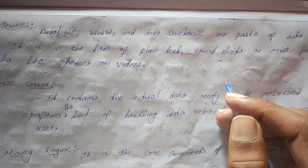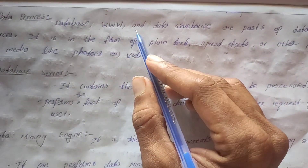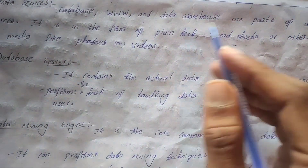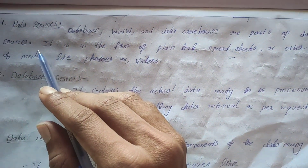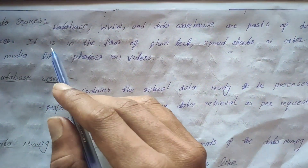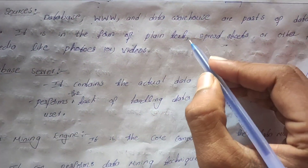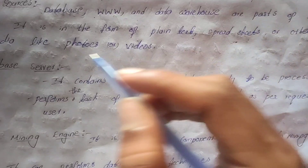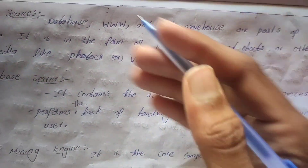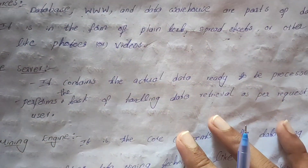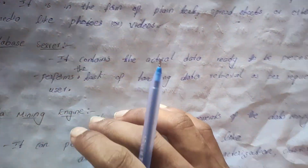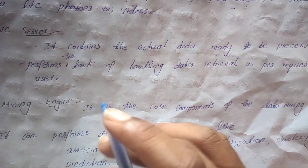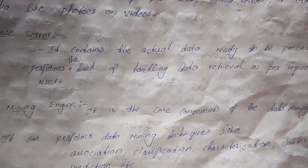Looking at each component in detail: data sources include databases, the web, and data warehouses. Data can be in the form of spreadsheets and other media formats like photos and videos.